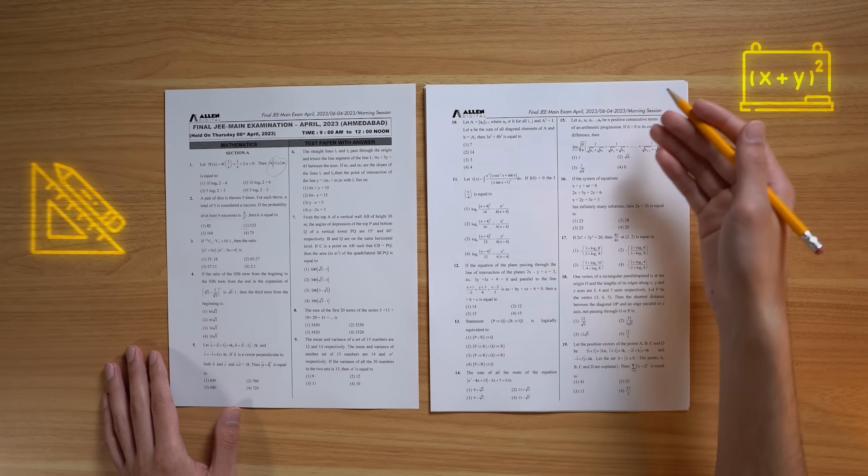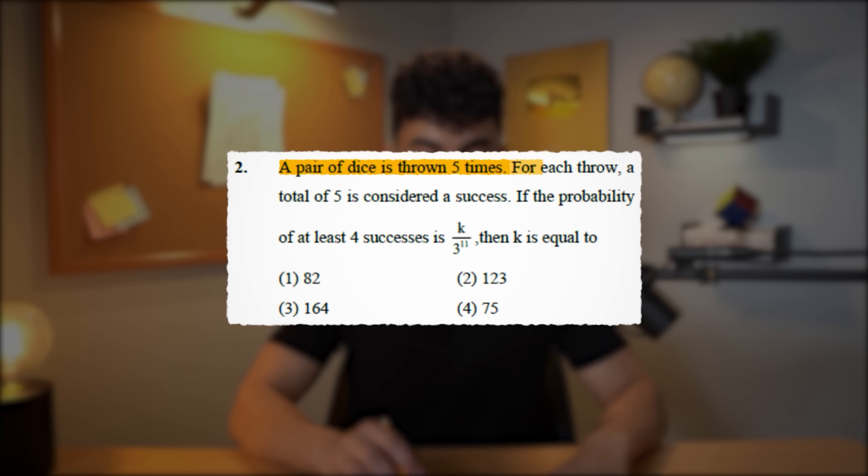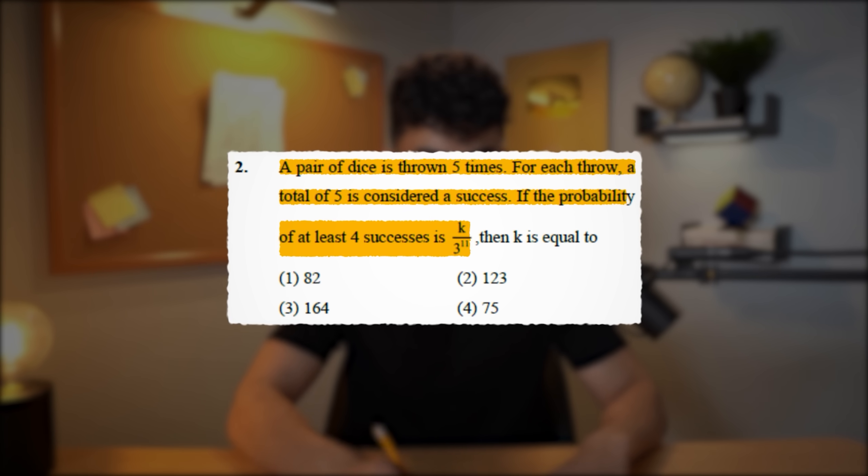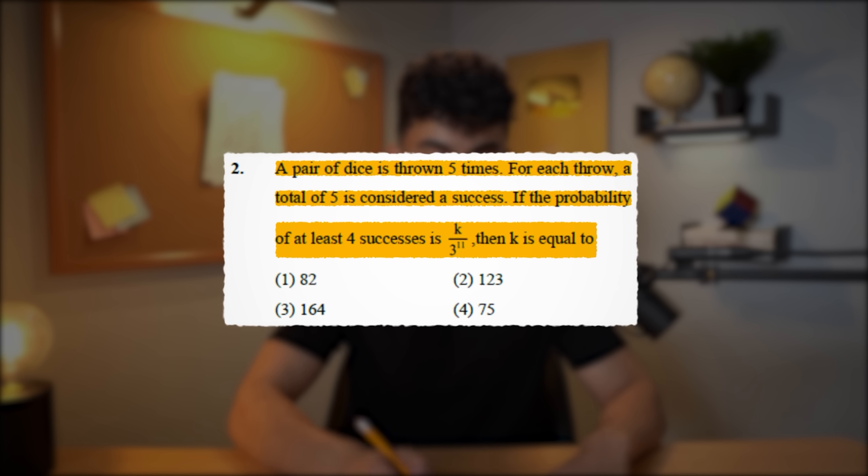Anyways, let's take a look at a couple more math questions. We have some algebra, we have some geometry, we have some probability. And actually, let's try to answer this question right here. A pair of dice is thrown five times. For each throw, a total of five is considered a success. If the probability of at least four successes is k over 3 to the 11th, then k is equal to what? 82, 123, 164, or 75. I actually want you to pause this video and try to solve this problem yourself.